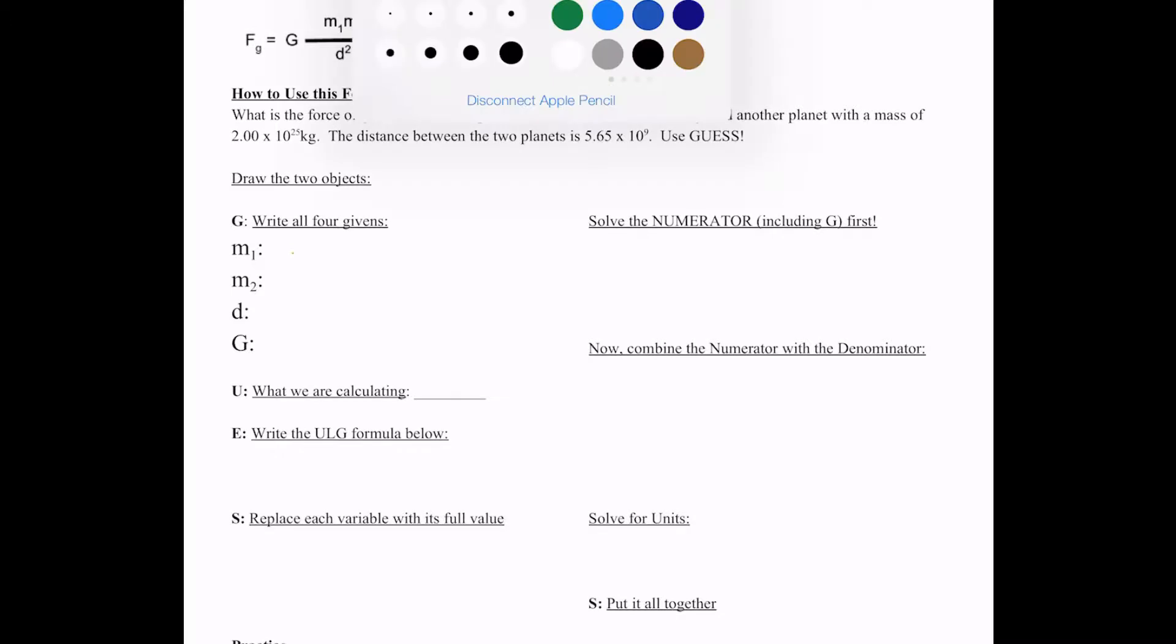We're going to use GUESS. First thing, just so we can visualize what's going on here, we have two planets and we're measuring the distance by center of mass to center of mass.